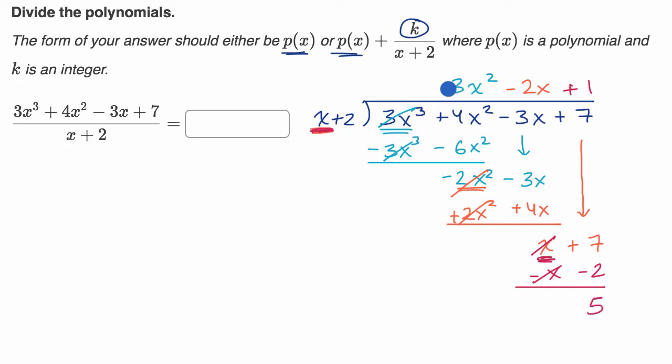And so we can rewrite this whole thing as, and we deserve, I guess, a little bit of a drum roll, 3x² - 2x + 1 plus the remainder five over x plus two.